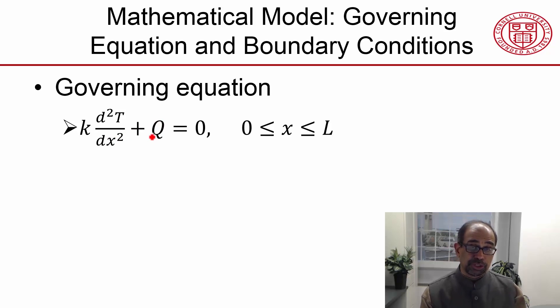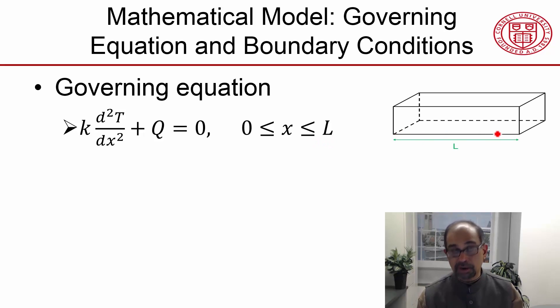And both these terms are written per unit volume and they have to add up to zero for energy conservation. And they are defined and this equation is defined from x equal to zero to x equal to L. That's because our bar is of length L.